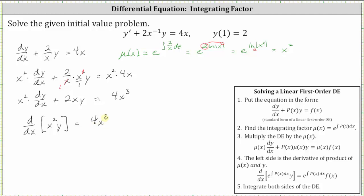Finally, step five: we now integrate both sides of the equation with respect to x. Integrating on the left side, the integration undoes the derivative and we're left with x squared y. On the right side, we have four times x to the fourth divided by four plus c.